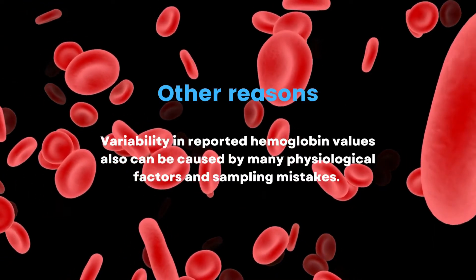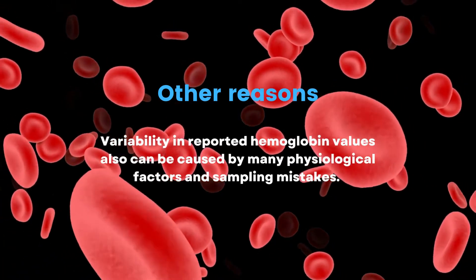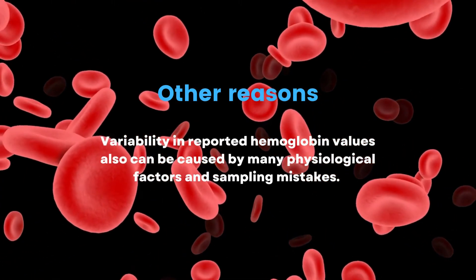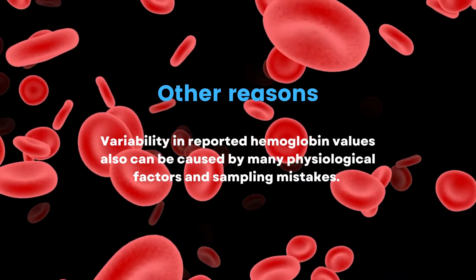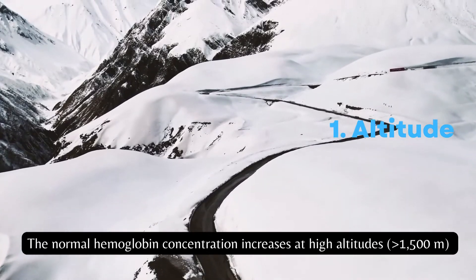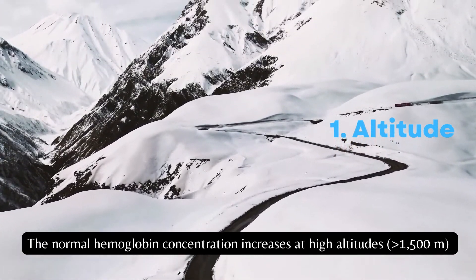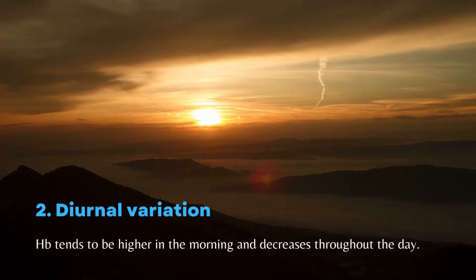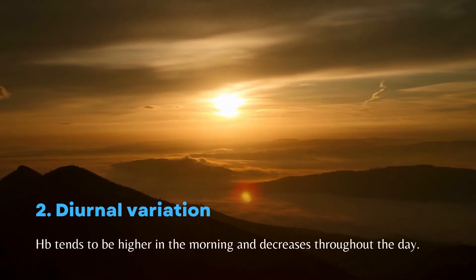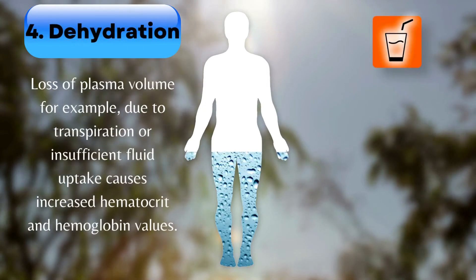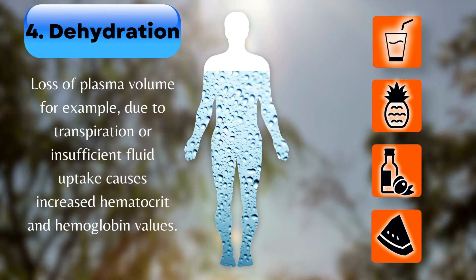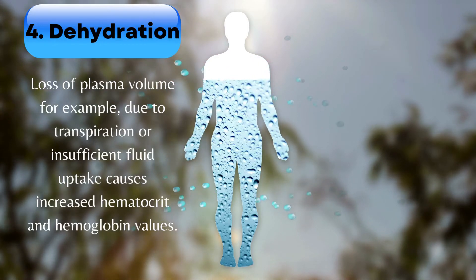Other reasons: Variability in reported hemoglobin values can also be caused by many physiological factors and sampling mistakes. Altitude: normal hemoglobin concentration increases at high altitudes greater than 1,500 meters. Diurnal variation: Hb tends to be higher in the morning and decreases throughout the day. Dehydration: loss of plasma volume — for example, due to perspiration or insufficient fluid intake — causes increased hematocrit and hemoglobin values.